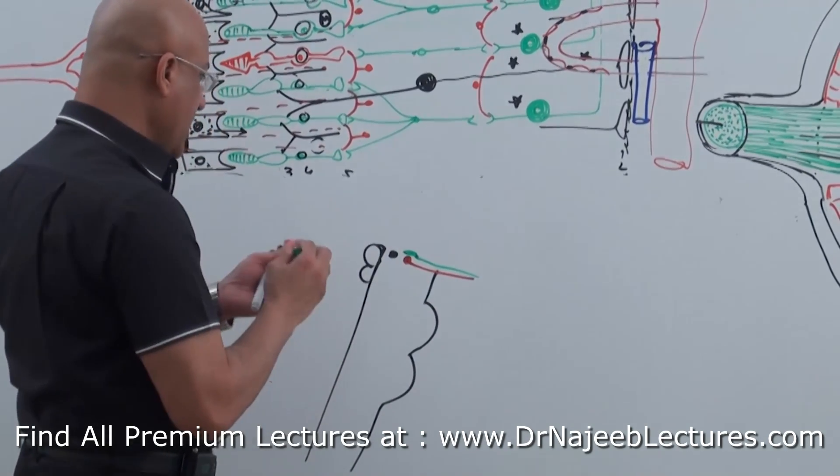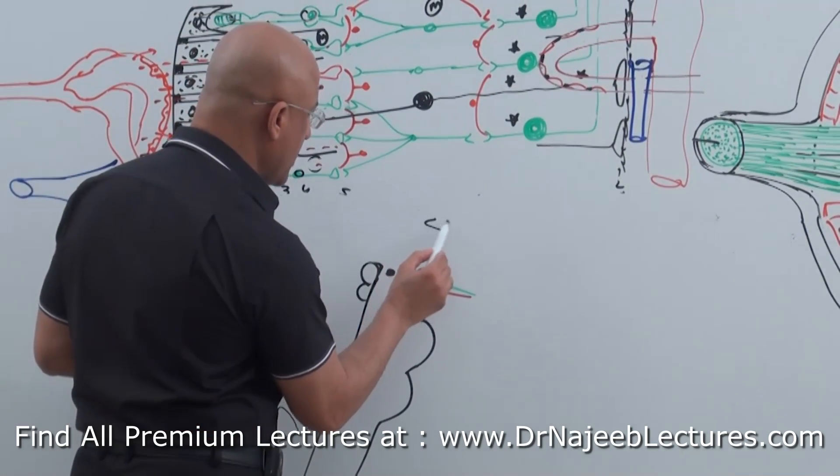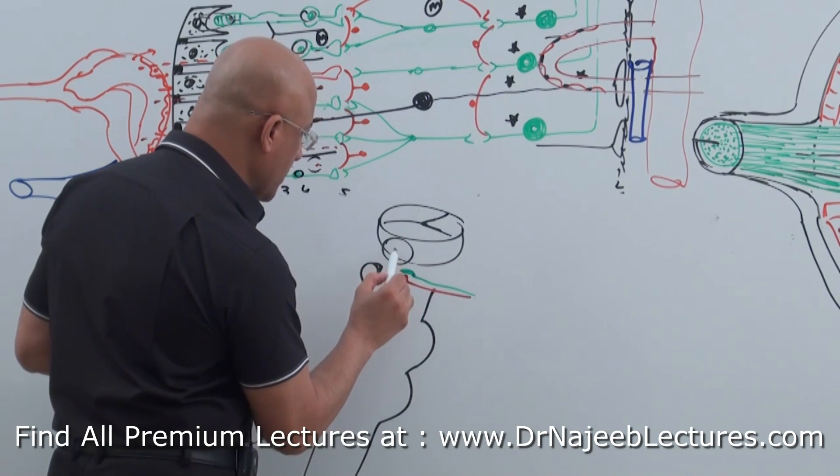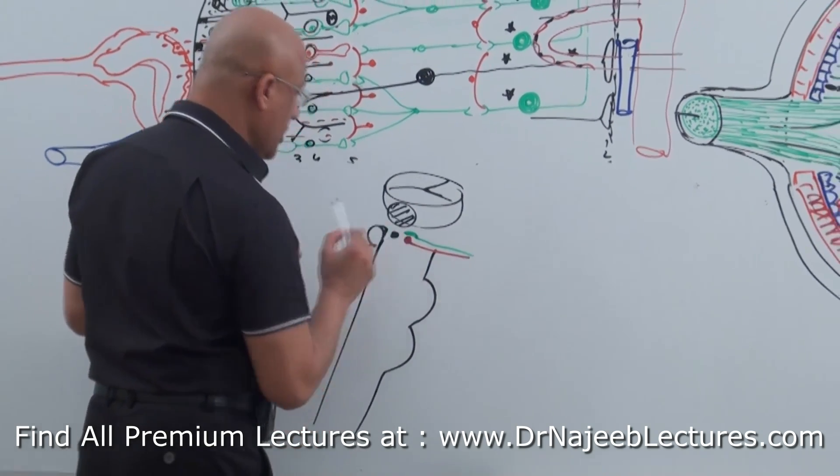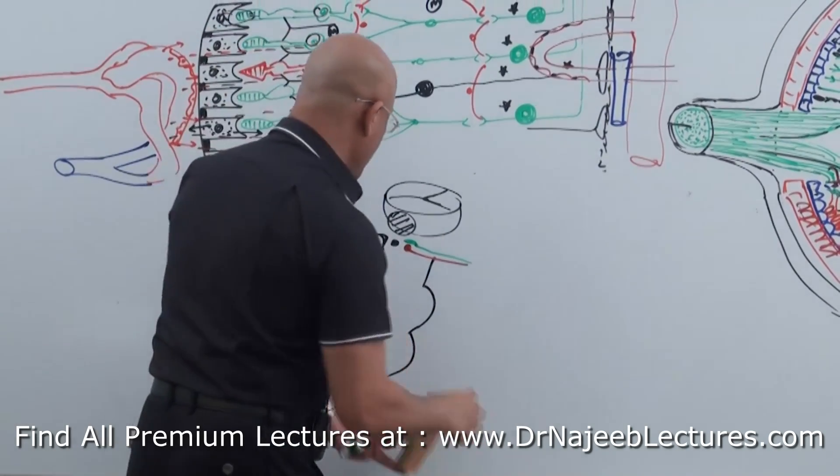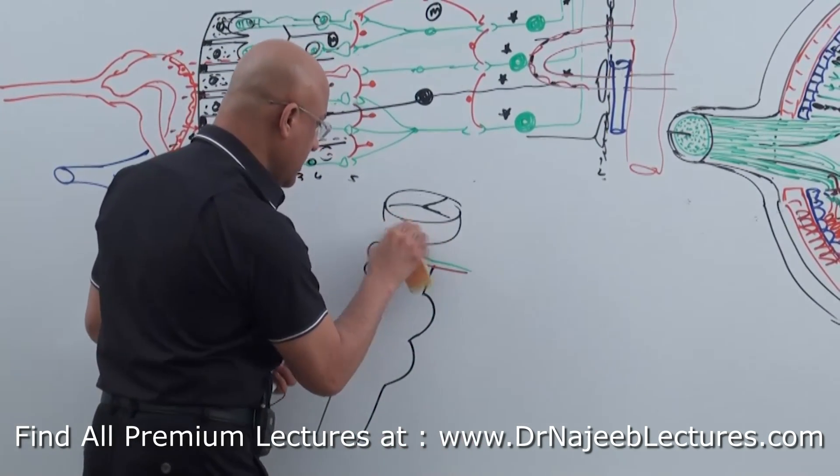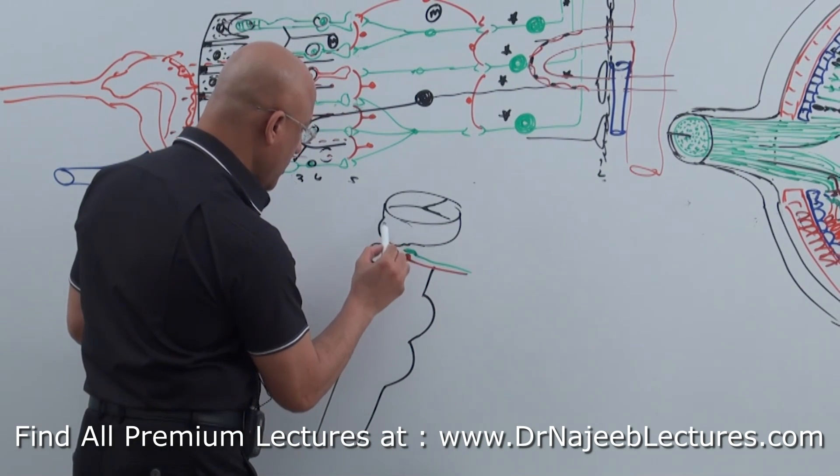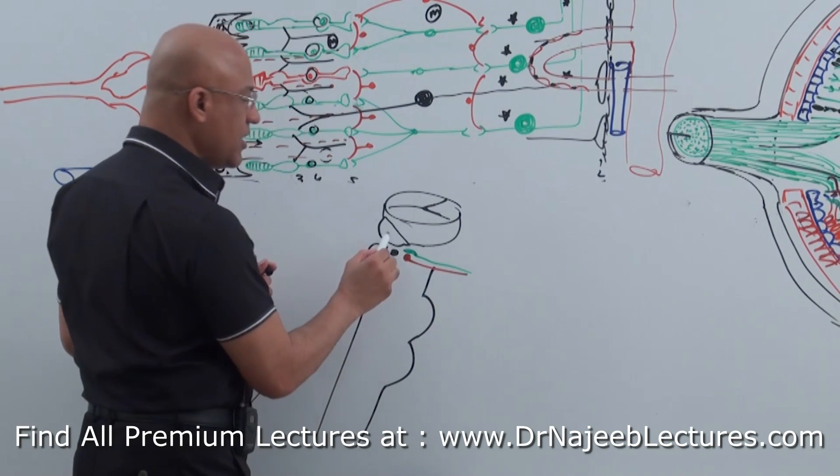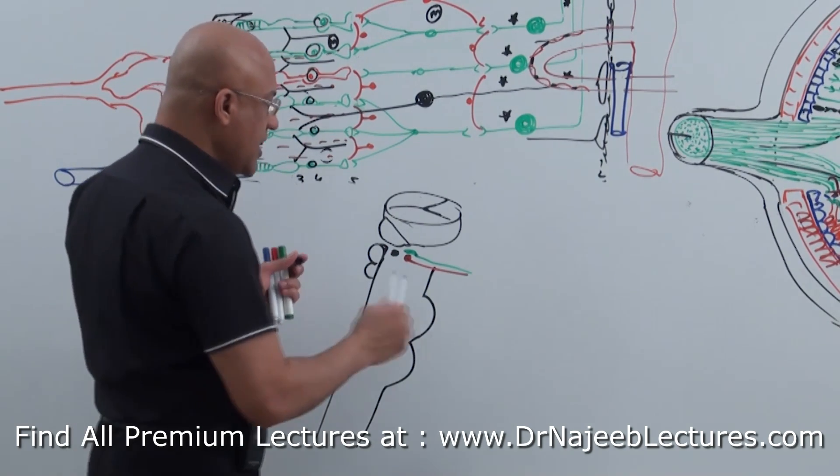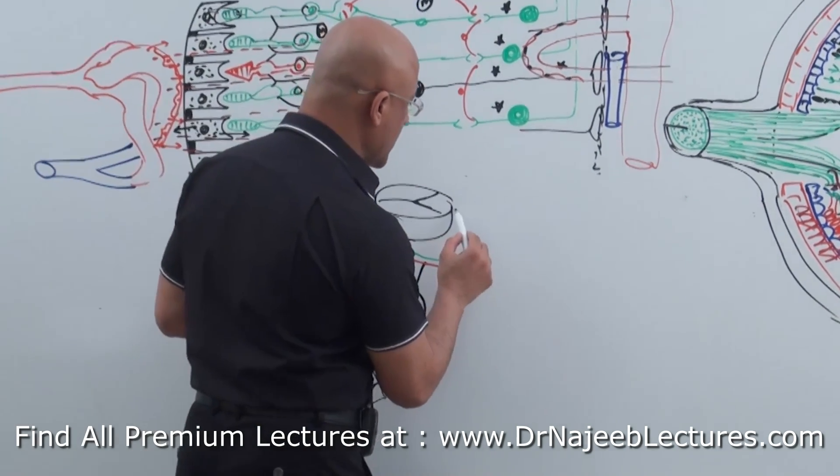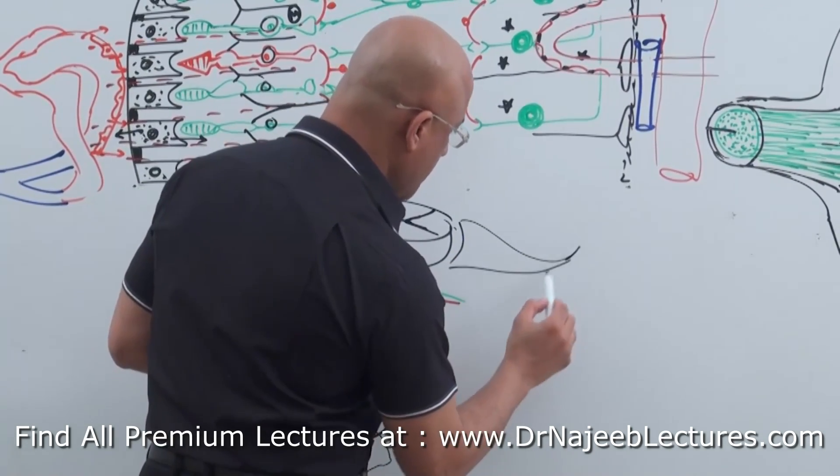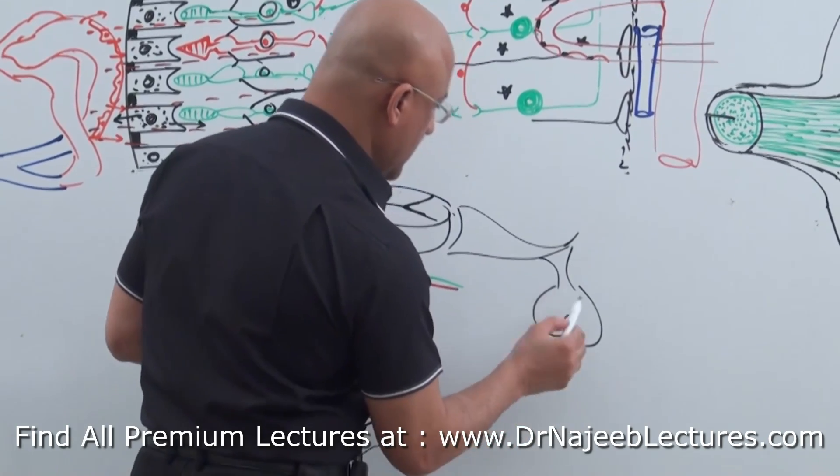But here at the top there must be - what is this structure? Thalamus. And let's suppose here is lateral geniculate body. Let me make it again. This is lateral geniculate body. And here is of course your hypothalamus, anterior and posterior pituitary.